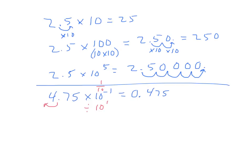We add a 0 in front to make the point not get lost. So doing a couple more practice examples like that: 4.75 times 10 to the negative 2. This would mean that we are now moving the decimal over twice. It's going to end up here, and we add in a placeholder zero. So this would be 0.0475. And again, add a 0 in front. As we saw before, multiplying times 10 to the negative 2 power is the same as dividing by 10 to the positive 2.